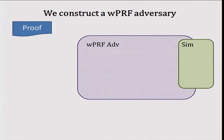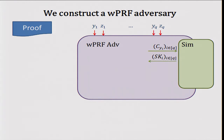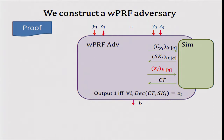Now let's construct a weak PRF adversary. He gets a bunch of inputs Y_1 up to Y_Q and Z_1 up to Z_Q, and does the following. He submits all of the circuits defined by these inputs to the simulator, gets the corresponding secret keys. He then submits all the challenge Z values to the simulator, gets a ciphertext, and simply checks the decryption: he takes the ciphertext, pairs it with every secret key, and checks if it decrypts to Z_i. He outputs one only if it holds for every secret key.